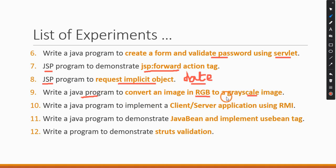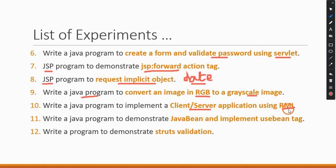Basically they want us to convert a colored image into a black and white image. For this we are going to use the ImageIO API available in Java. The tenth program is to implement client-server architecture using RMI — Remote Method Invocation — to write some kind of client-server application.